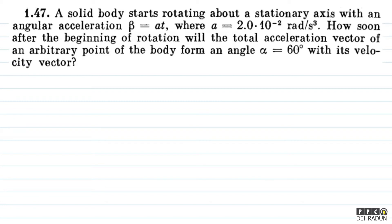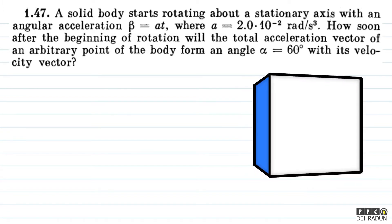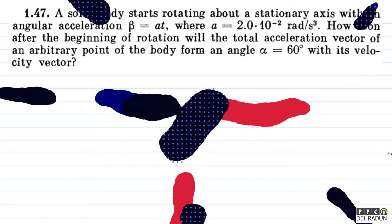The question says: a solid body starts rotating about a stationary axis with an angular acceleration beta equal to at, where a is equal to 2 × 10⁻² radian per second cube. How soon after the beginning of rotation will the total acceleration vector of an arbitrary point of the body form an angle alpha equal to 60 degrees with its velocity vector?